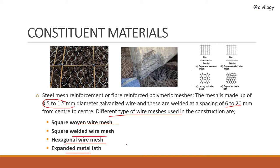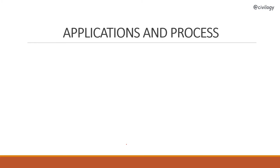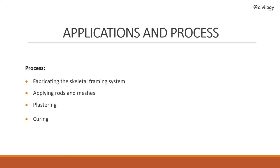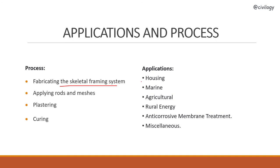These are the constituent materials used in ferrocement. Next, the process of ferrocement: first, fabricating the skeletal framing system; then applying the rods and meshes; then plastering the material; then curing. This is the process of ferrocement. Applications include housing, marine, agricultural, rural energy, anti-corrosive membrane treatment, and other miscellaneous works.